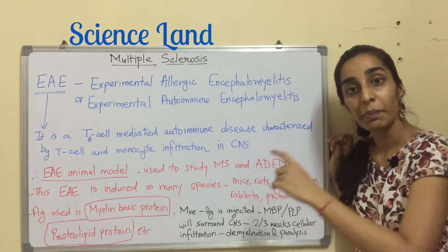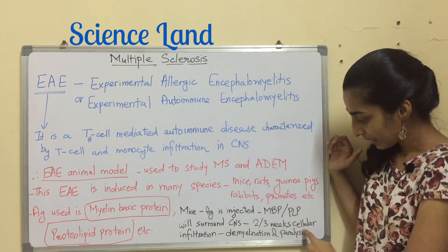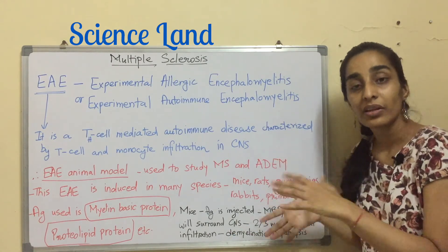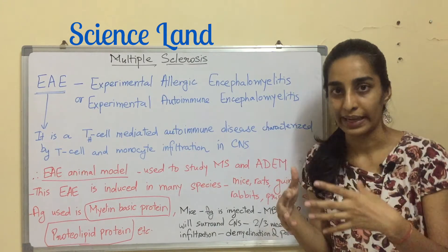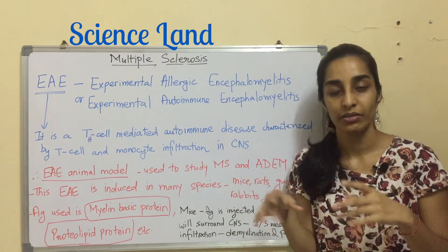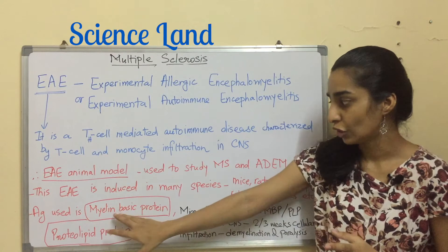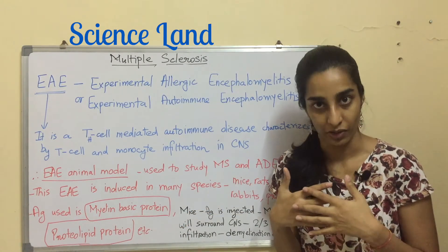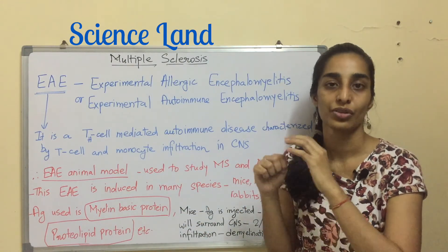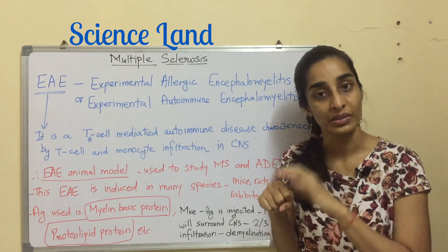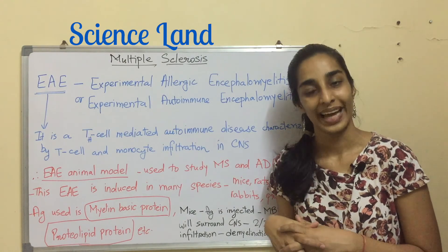The antigen surrounds the central nervous system entirely, so the mouse body generates T cells that infiltrate the CNS — known as cellular infiltration. This happens within two to three weeks, causing demyelination and eventually paralysis. Most mice die, but those that survive are taken for study — that is how multiple sclerosis is studied. Normally MBP is not an antigen for a healthy human being, but in EAE, the myelin basic protein is exposed under non-physiologic conditions so that the immune system recognizes it as an antigen. That is the introduction to multiple sclerosis.